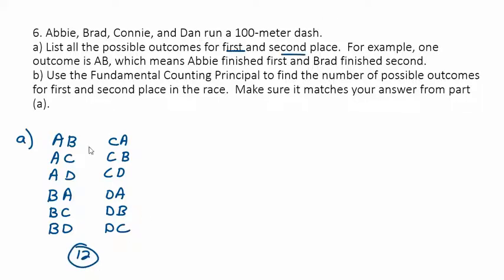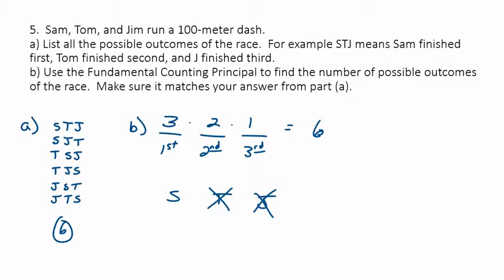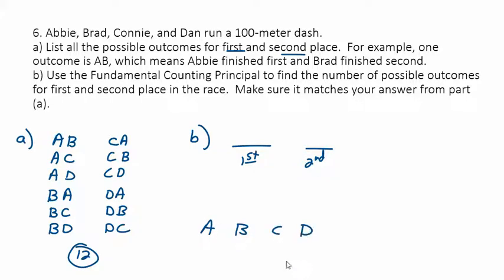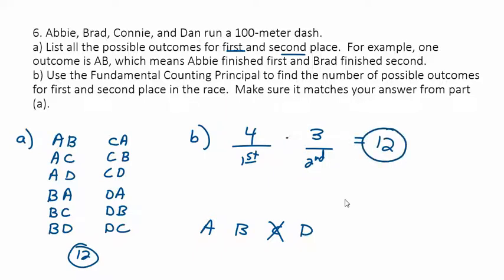This is different from the last example — last time we did the whole race, here we just did first and second. Using the fundamental counting principle: first place has four possibilities (Abby, Brad, Connie, Dan). Once somebody finishes first, that only leaves three possibilities for second. Four times three is 12, so there are 12 possible outcomes for first and second.